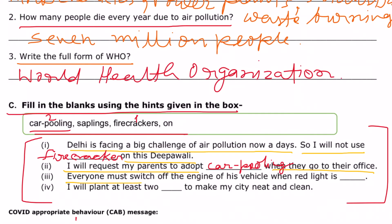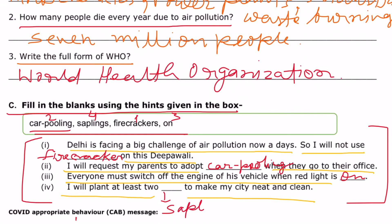Question number three: everyone must switch off the engine of their vehicle when the red light is on. When the red light is on, we should stop the engine of our cars. Question number four: I will plant at least two saplings to make my city neat and clean. So the answer to fill in the blank is saplings.